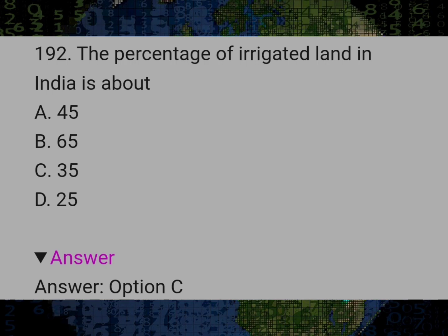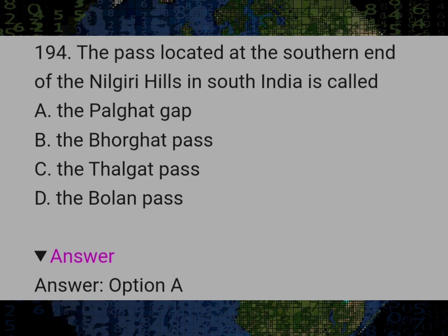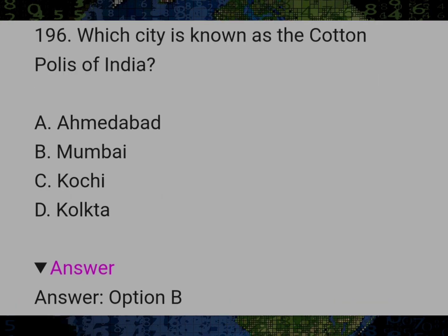The percentage of irrigated land in India is about? Answer C: 35%. The southernmost point of Peninsular India, Kanyakumari, is? Answer D: North of the equator. The pass located at the southern end of the Nilgiri hills in south India is called? Answer A: The Palghat Gap. Which city is known as the cotton capital of India? Answer B: Mumbai.